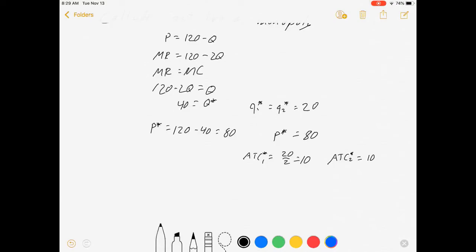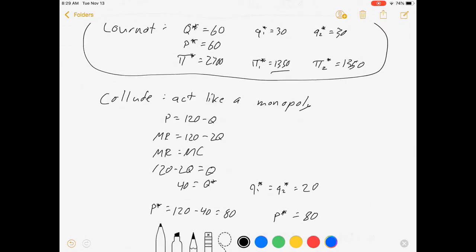So each firm is going to make a profit. They're going to have the same profit, they're sharing it evenly by assumption. Let's see, quantity is 20 times price which is 80 minus average total cost which is 10, so that's 20 times 70, which is 1400. Now remember, this 1400 is compared to the 1350 before.